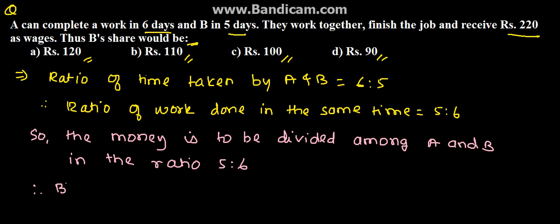Therefore, B's share is equal to Rs. 220 into 6 upon 11, which is equal to, after doing the simple calculations we get, Rs. 120.